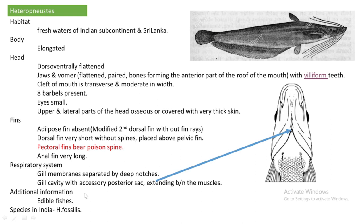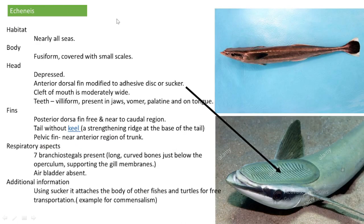The gill cavity has an accessory posterior sac that extends between the muscles of the body. Additional information: Heteronistus is an edible fish. The species found in India is Heteronistus fossilis.